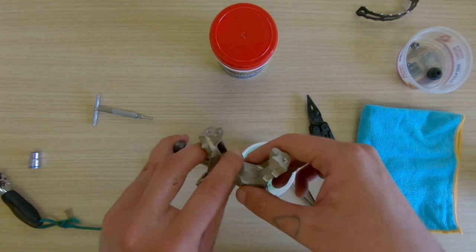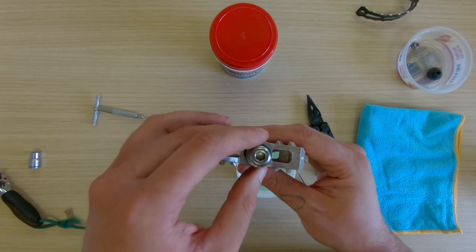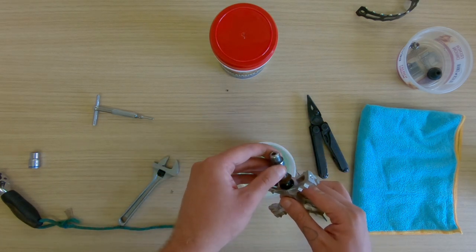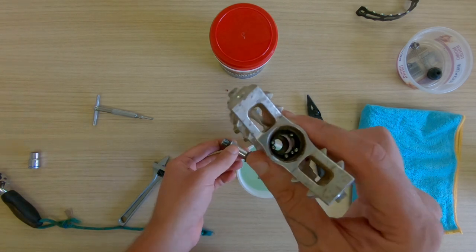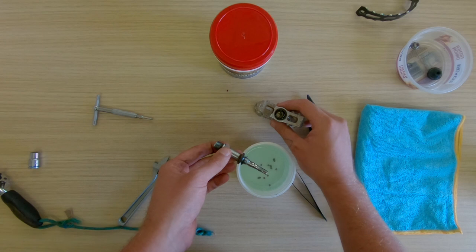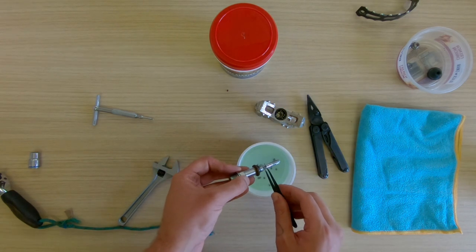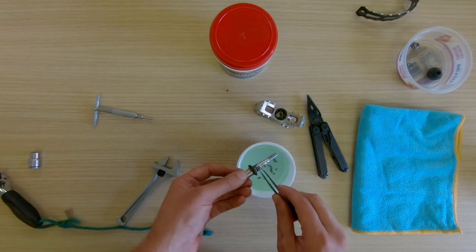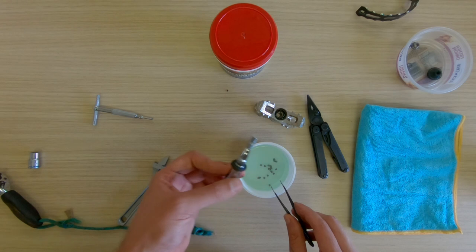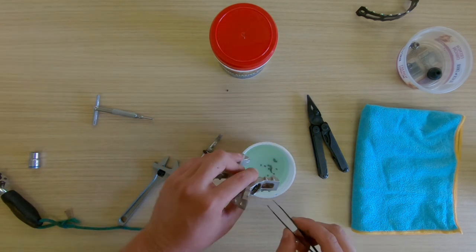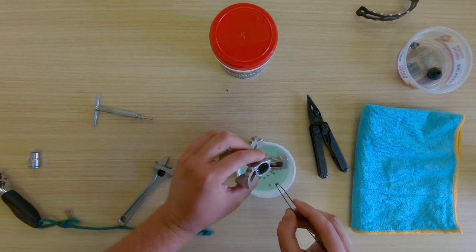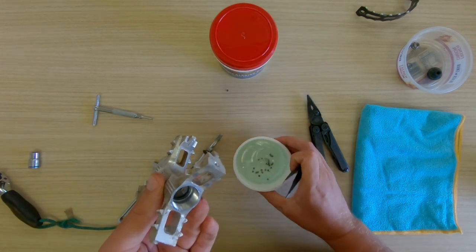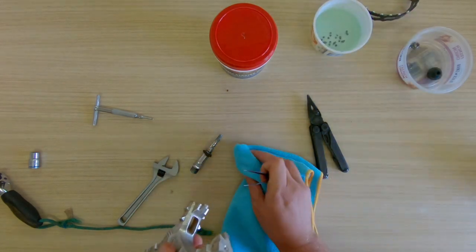We're going to turn this over and very carefully fish this out because there are another 12 bearings on this side. A lot of people like to keep the bearings from each side separate in case maybe they've worn differently or something. I don't care—they're all the same as far as I'm concerned, so they're all going in together. Once you're done fishing all the bearings out, there should be 24 in there.